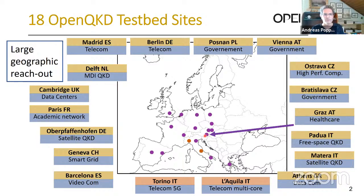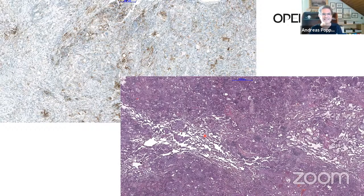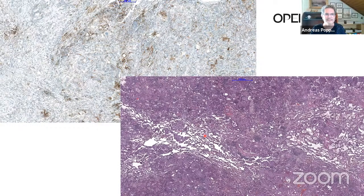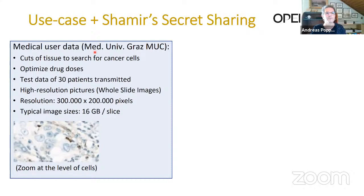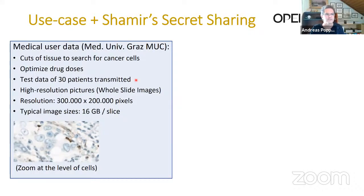These pictures look like ciphertext at first glance, but they're really important. They're produced by the Medical University of Graz, which is also a partner of OpenQKD. It's about tissue analysis to search for single cancer cells inside these pictures — really needed to optimize the drug dose of ill people. For the demonstration, we took pictures of 30 different patients and sent them across Graz.